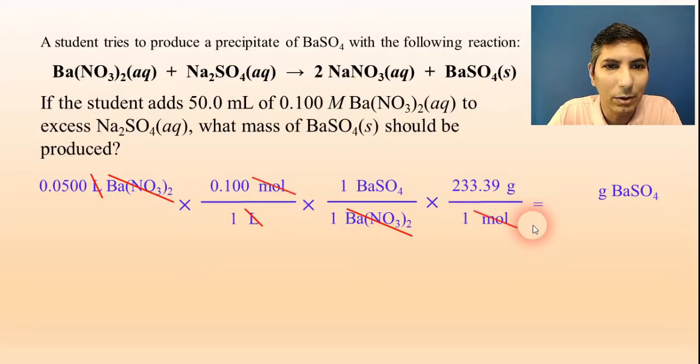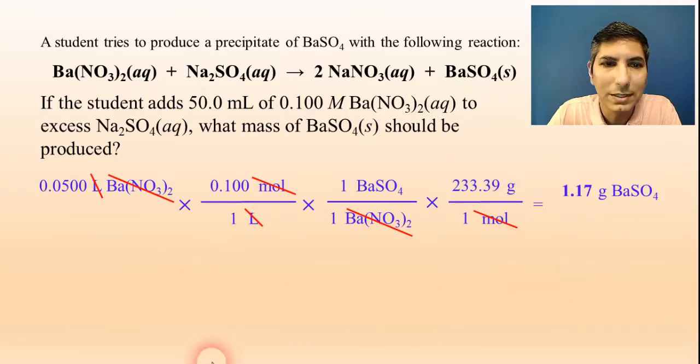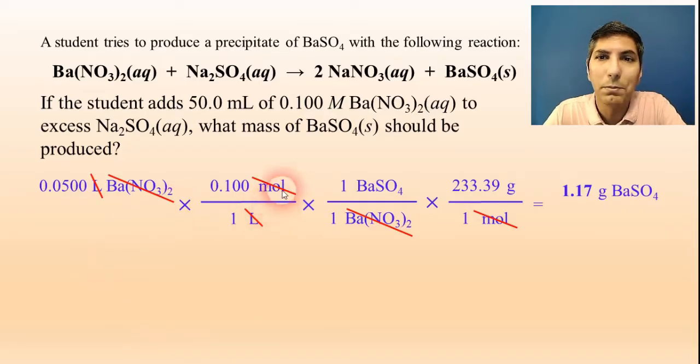Now I just have to cancel moles and calculate 0.05 times 0.1 times 233.39, and the answer I'm getting is about 1.17 grams of barium sulfate. So, that's how you solve these problems. This is basically just an application of reaction stoichiometry. Really, the only difference is in that first step. When you convert to moles, you use the molarity as a conversion factor.